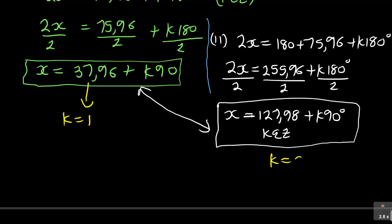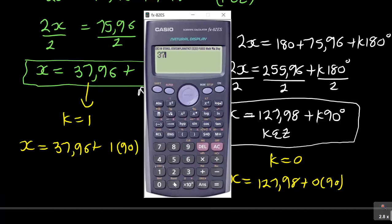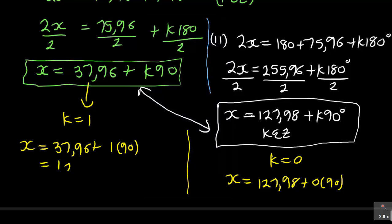So if K is 1, I've got x is equal to 37.96 plus 1 times 90, and then on the other one, it would be x is equal to 127.98 plus 0 times 90. So I'm using these two. Now if I use a calculator on the first one, I'm having 37.96 plus 1 times 90. See, I'm getting here 127.96. So x is 127.96. Now on the other one, x will also be equal to, because 0 times 90 is just 0, is 127.98.